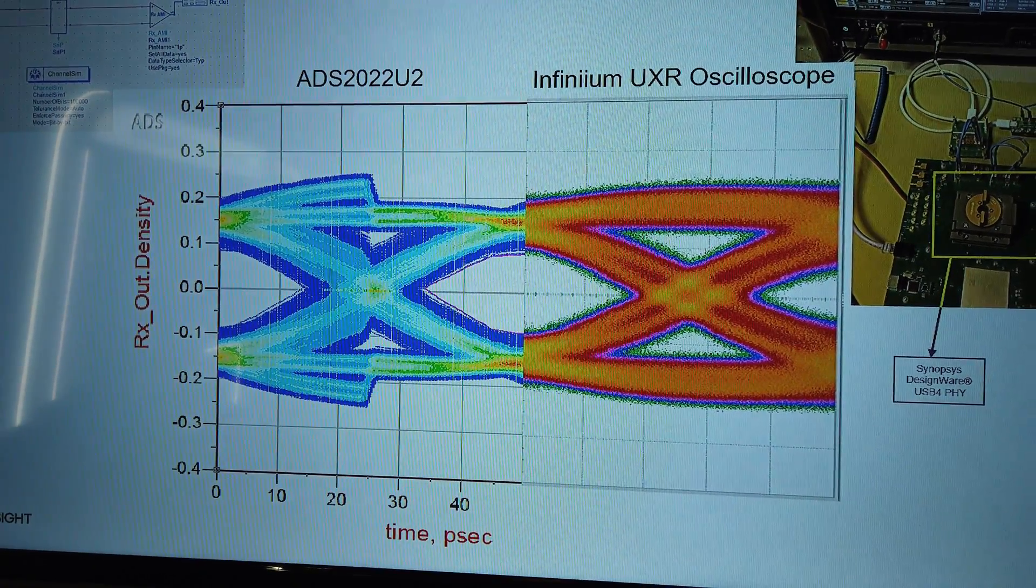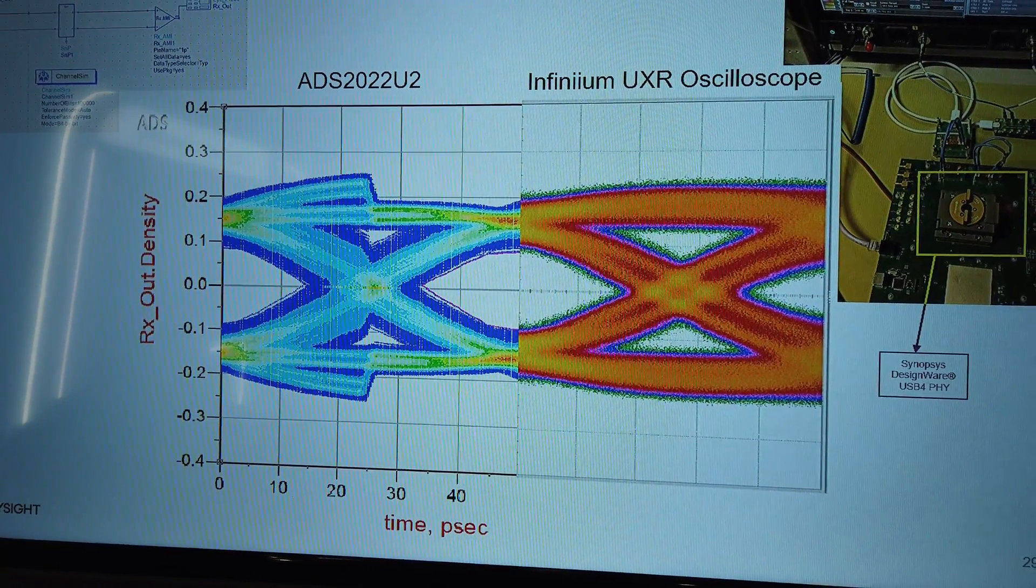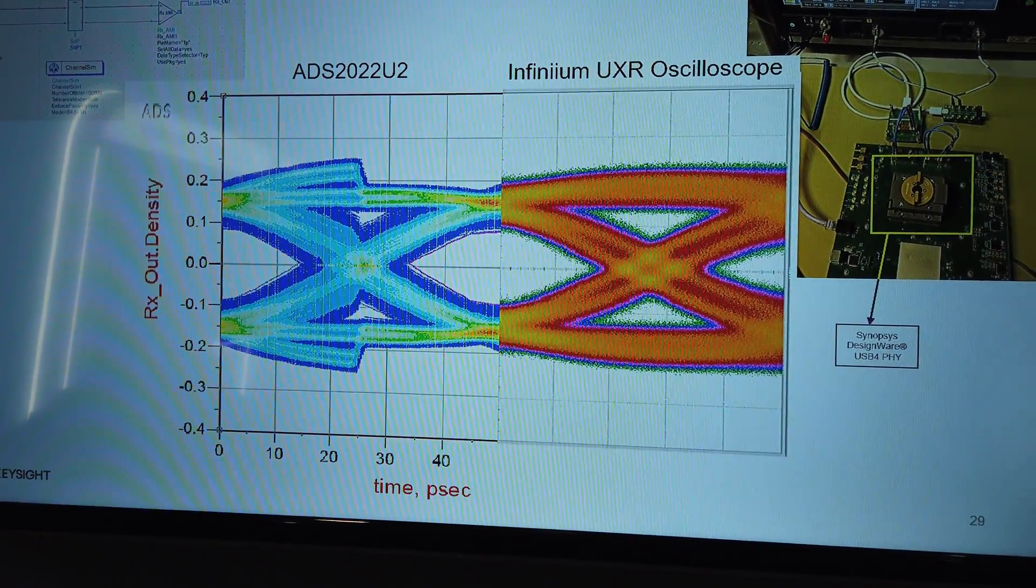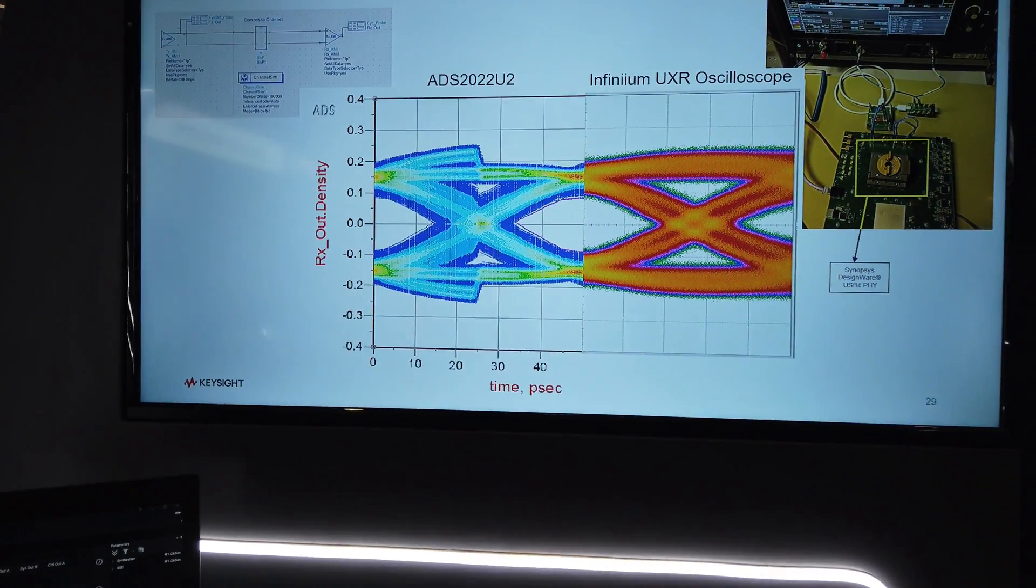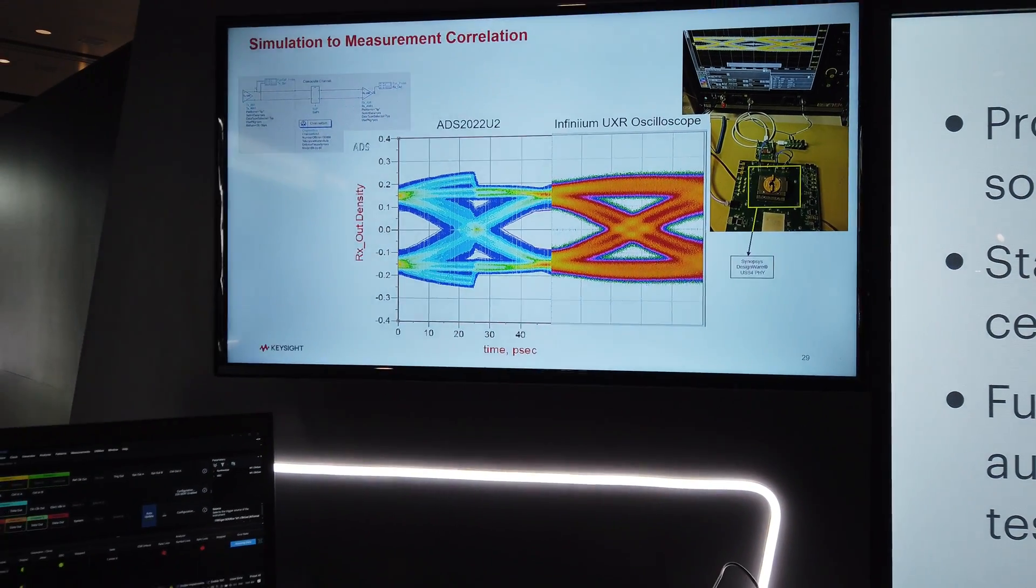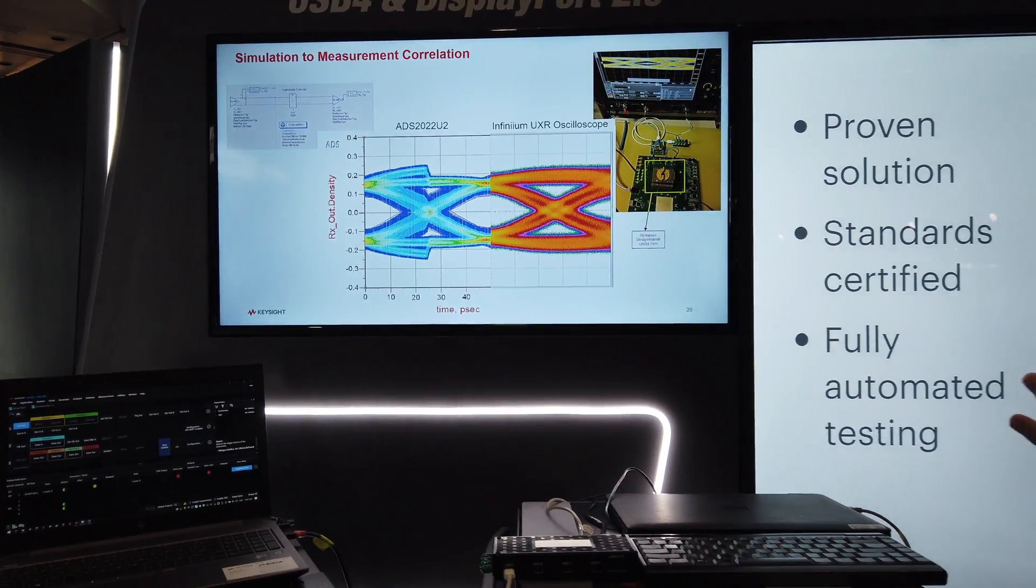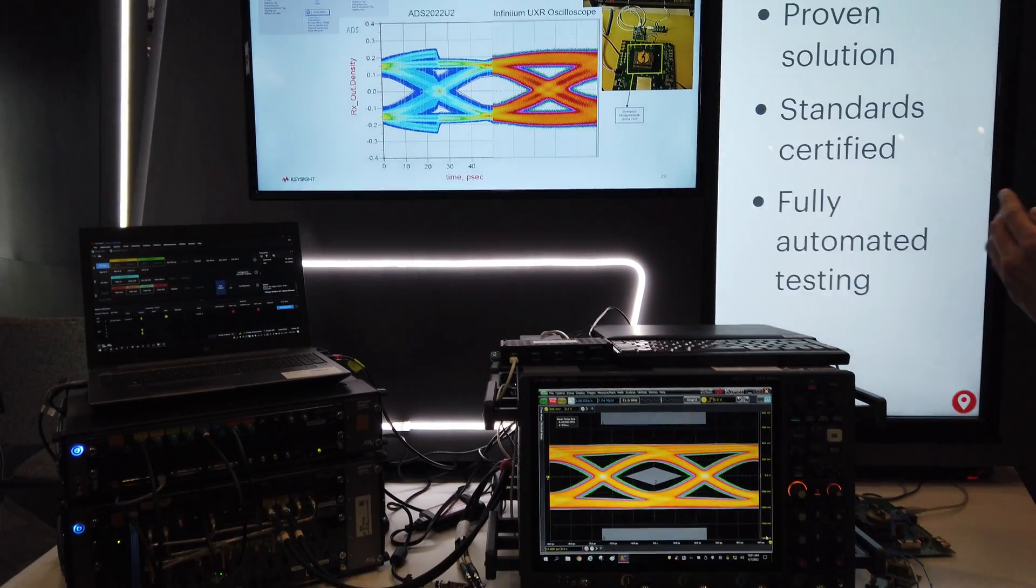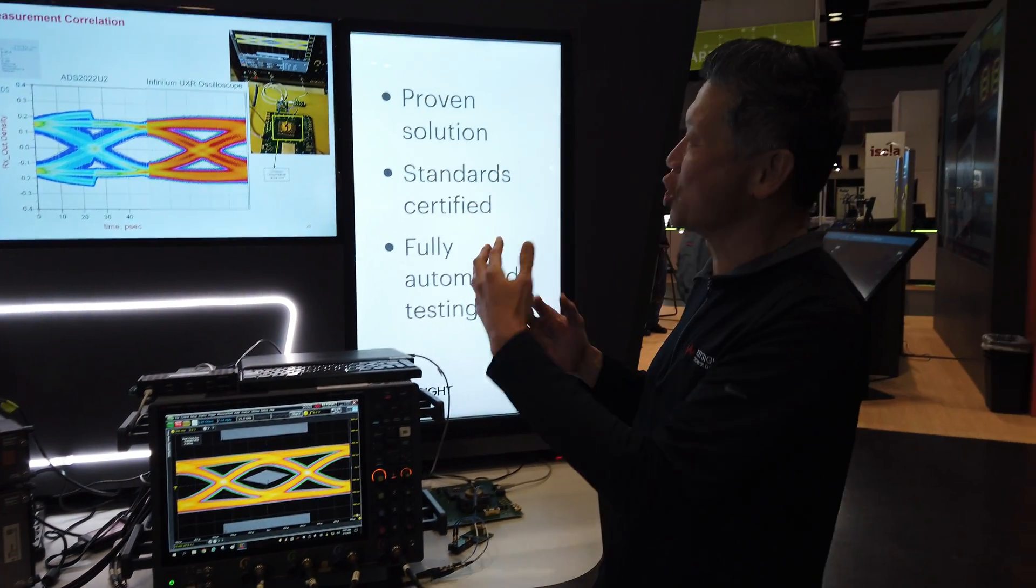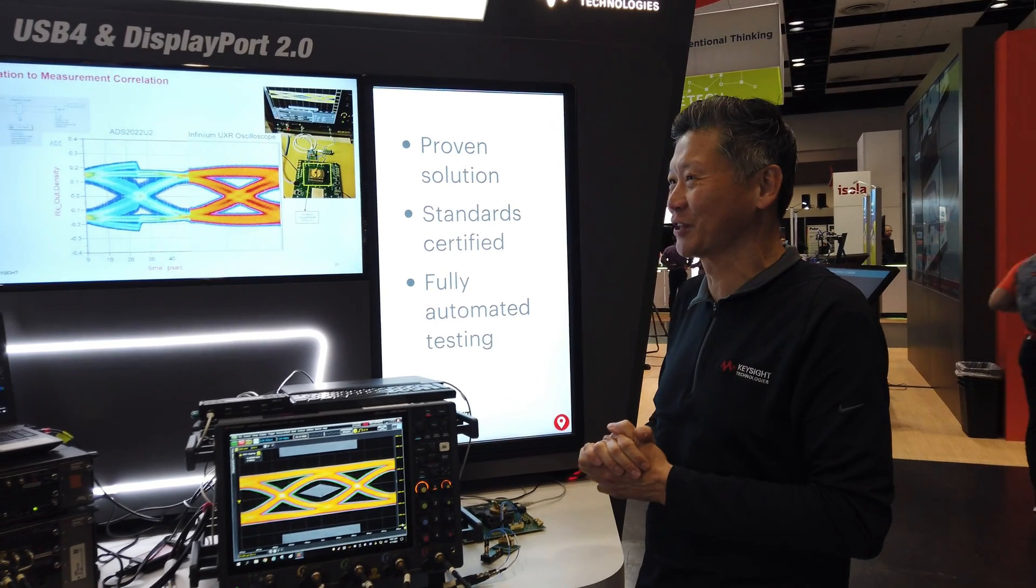You can see almost perfect correlation between the left simulation and the right. This is really a picture that shows the entire chain from design simulation all the way to measurements correlating. And that's what we want, because the last thing you're going to do is turn on a chip and not know what it's supposed to do.